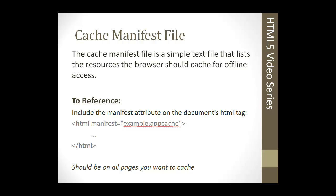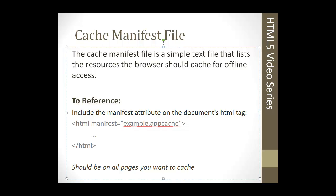To use application cache, you have to have a manifest file in your root directory. It specifies exactly which files you want cached — not just HTML files, but images, CSS, and JavaScript. You need to specify what you want available when there's no internet connection. These are simple text files, and you can use different extensions, for example, '.appcache'.